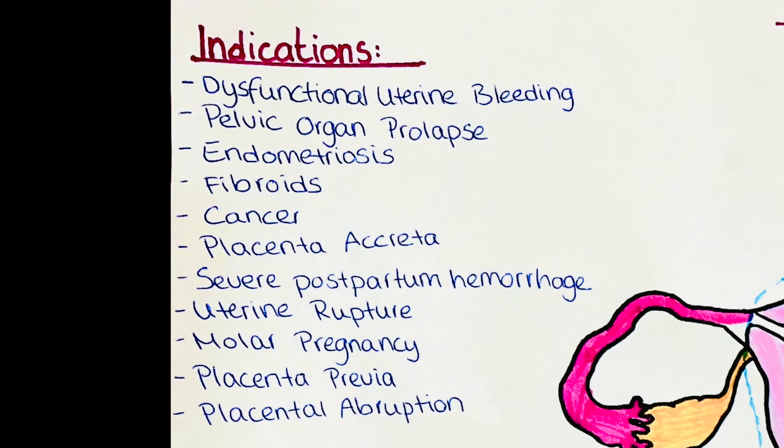Endometriosis is a condition in which the tissue that lines the uterus grows outside of the uterus. It can cause pain, heavy menstrual bleeding, and infertility.